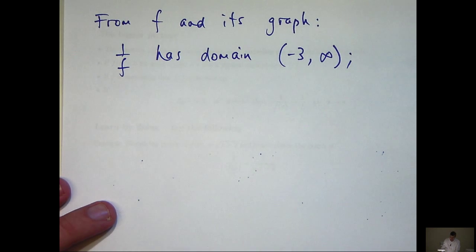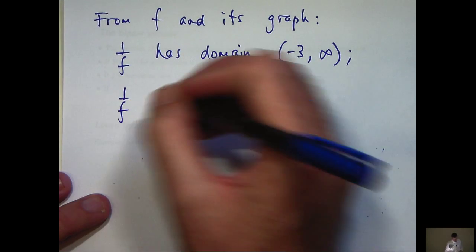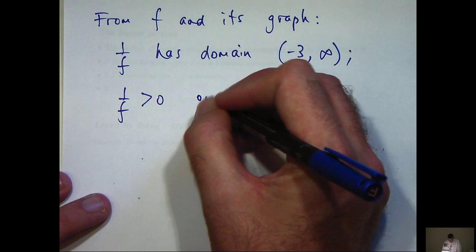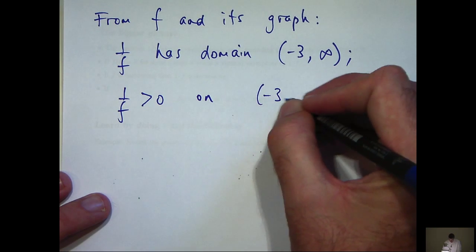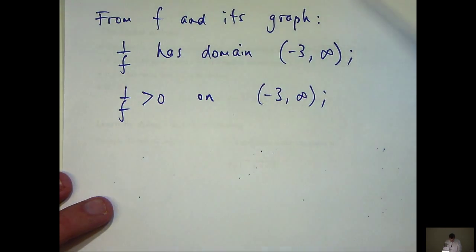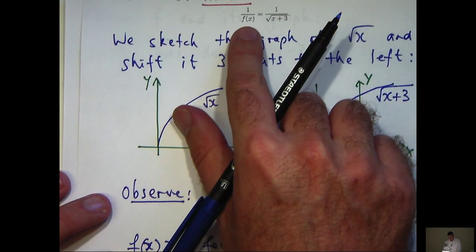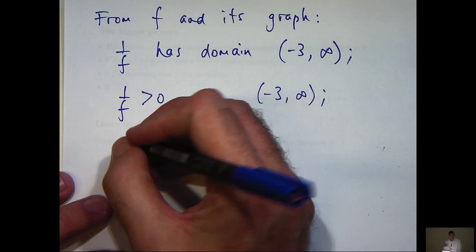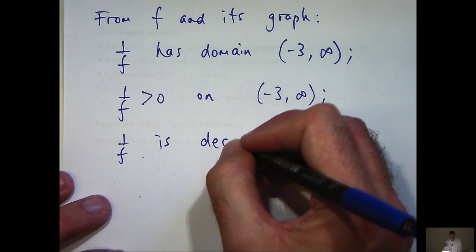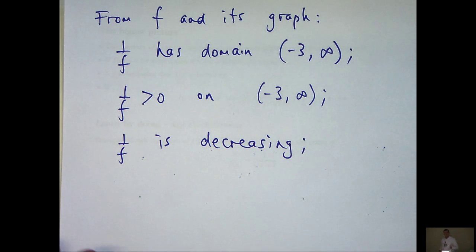Okay, what else do we want to put down about our reciprocal function? Well, f of x is positive, so 1 on f will also be positive because we're dividing positive by positive. We also noted that f was strictly increasing, so 1 on f must be strictly decreasing.